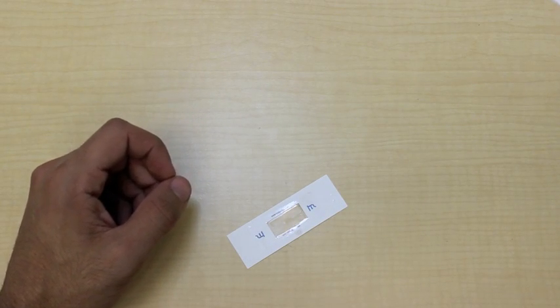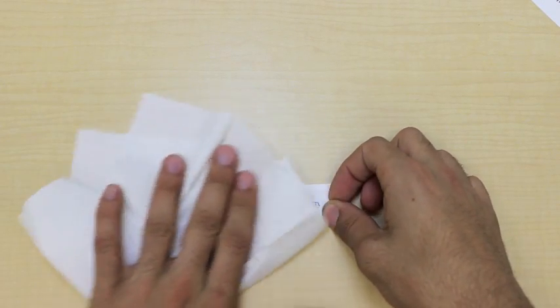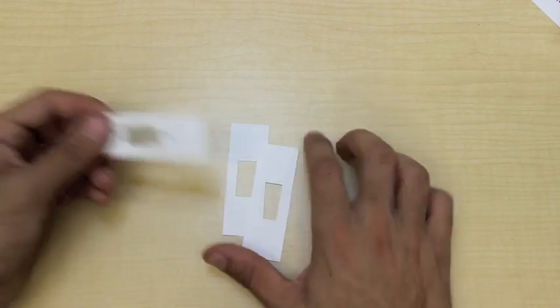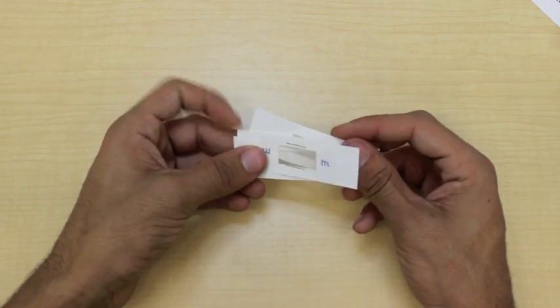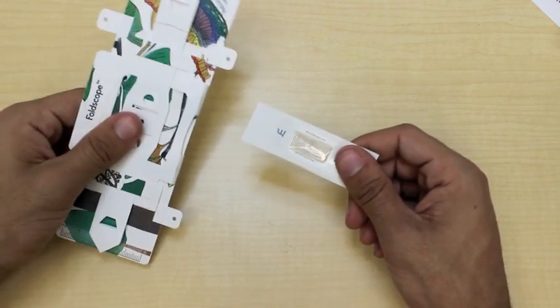Now, we can take a paper towel and clean off any liquid that may have leaked outside. And there we have it, our slide. Same as before, we can insert it by stacking it on top of two blank slides, and then inserting this into our foldscope.